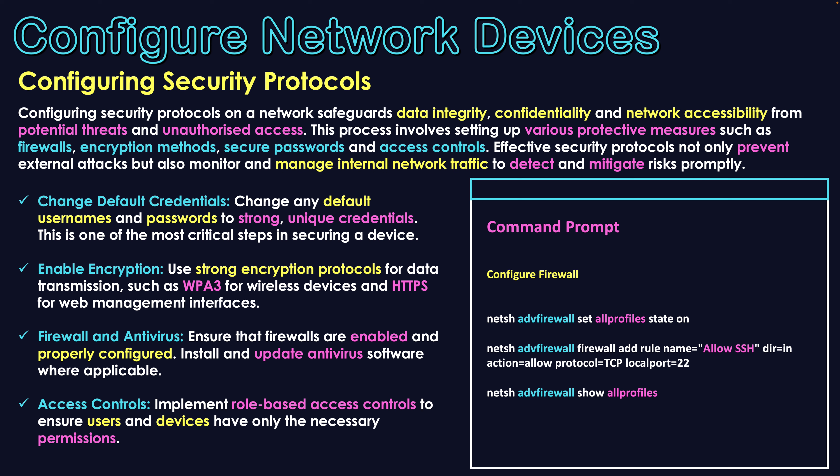The next category is configuring security protocols. On a network, we need safeguards in place to protect data integrity, confidentiality, and network access from potential threats and unauthorized access. This involves setting up various protective measures such as firewalls, encryption methods, secure passwords, and access controls. Effective security protocols not only prevent external attacks, but also monitor and manage internal network traffic and detect and mitigate risks promptly.